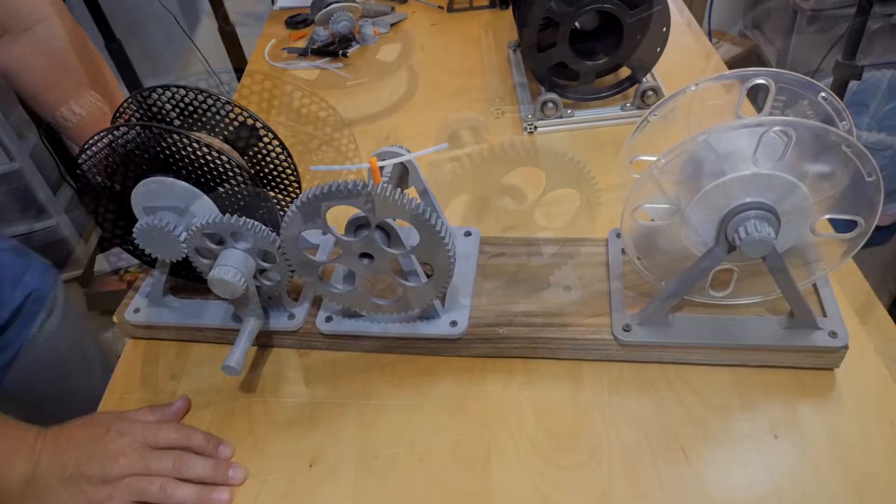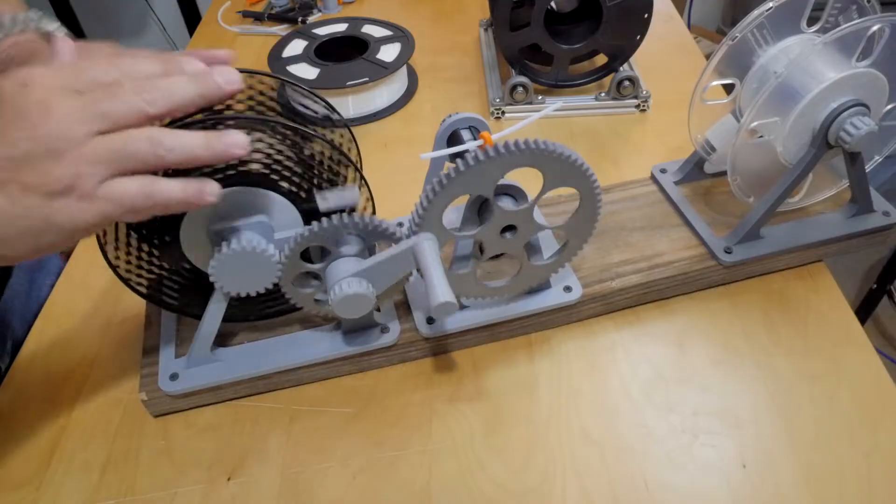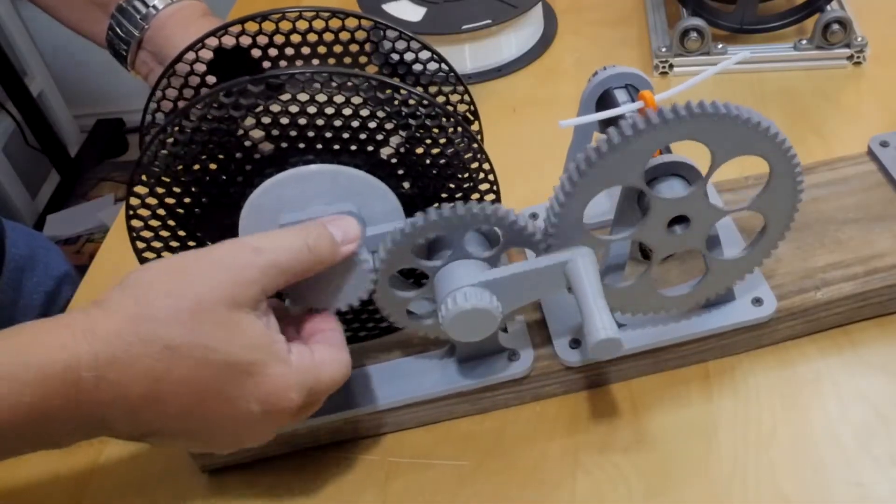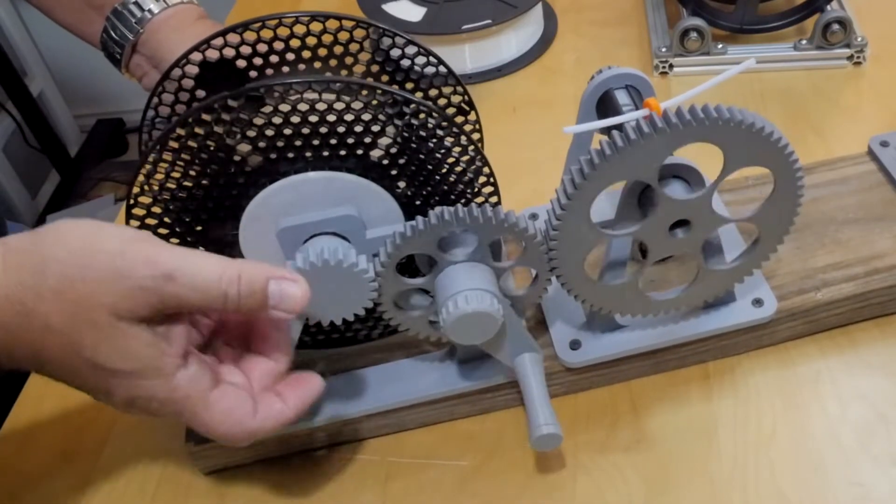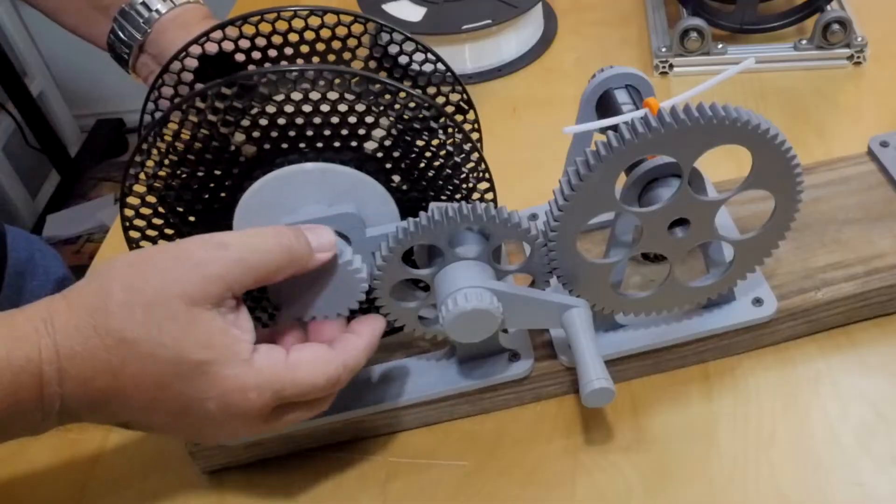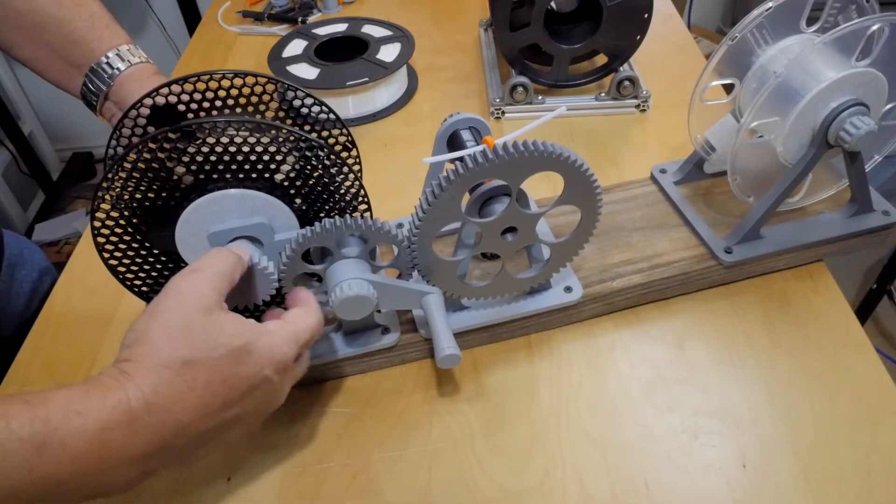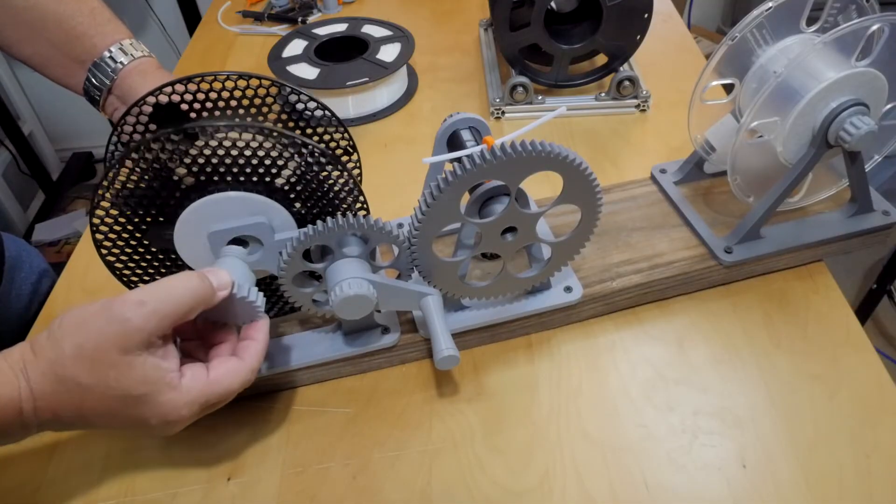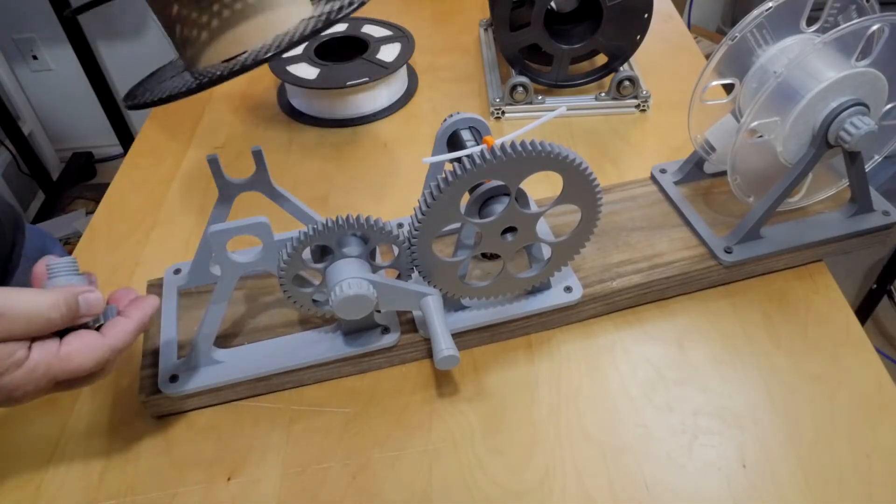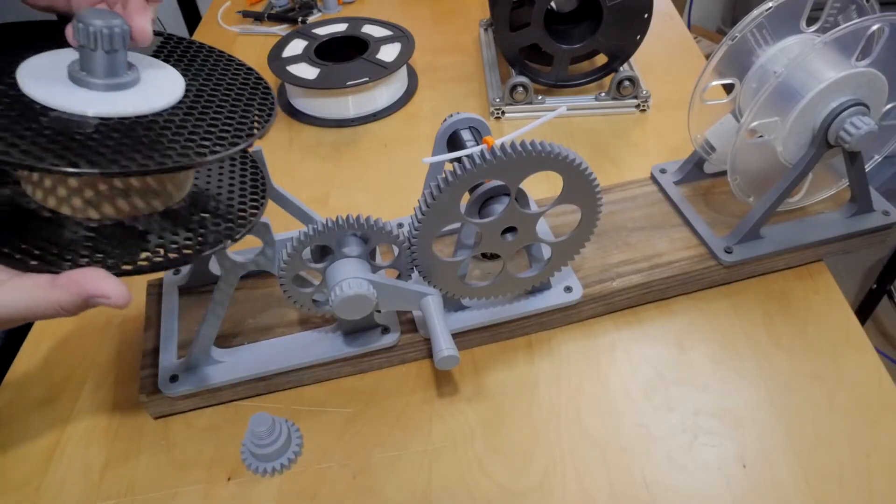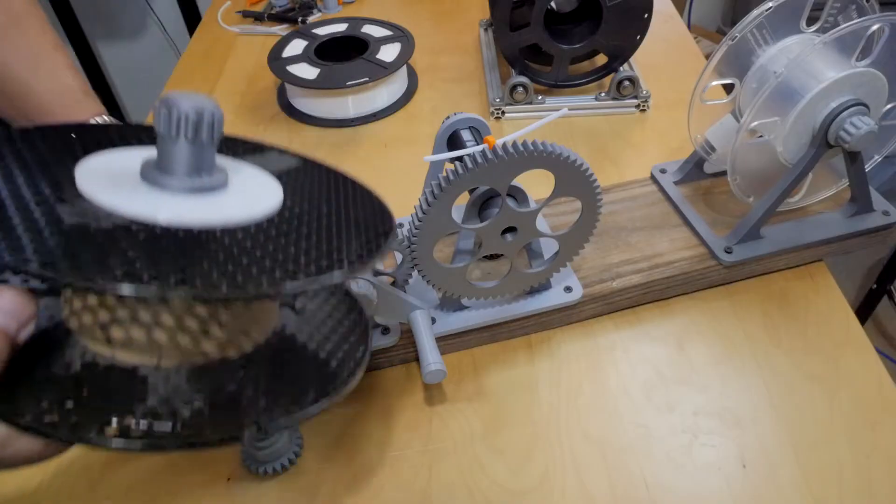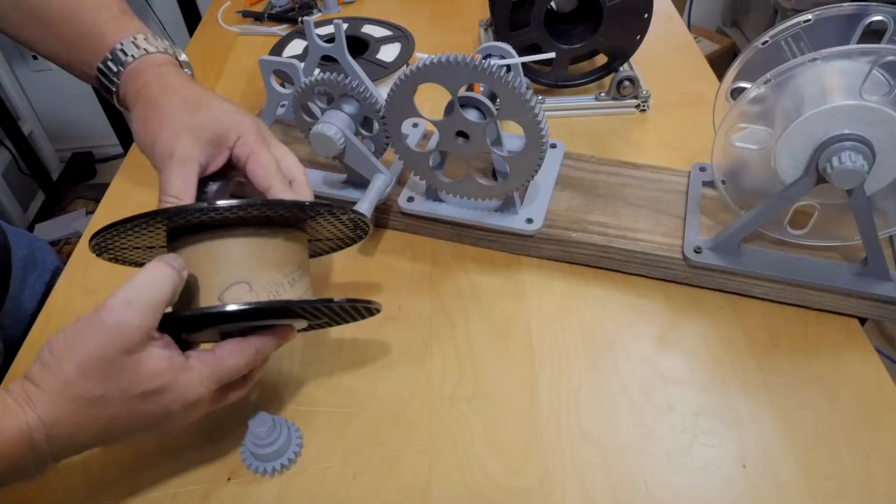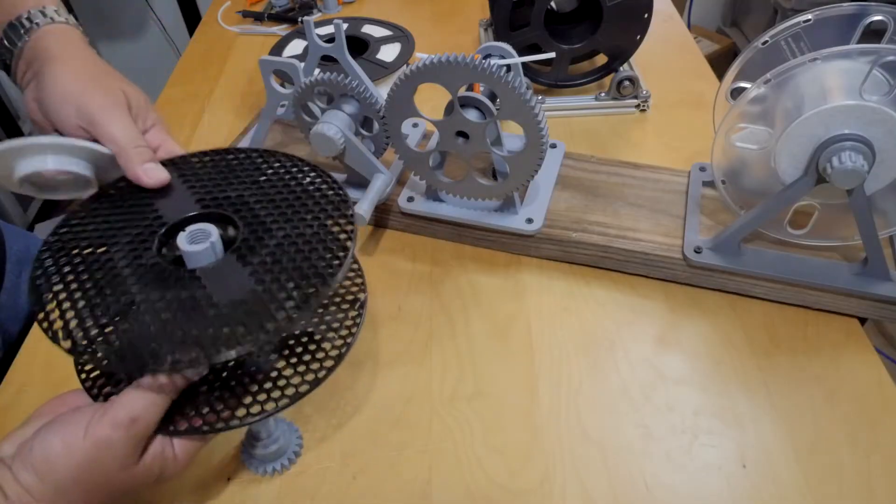This spool is already on here but let me show you how it's put on and off. This is reverse threaded because when it's driving this way it's putting pressure counterclockwise, so I didn't want it to come loose. It comes off pretty easy.